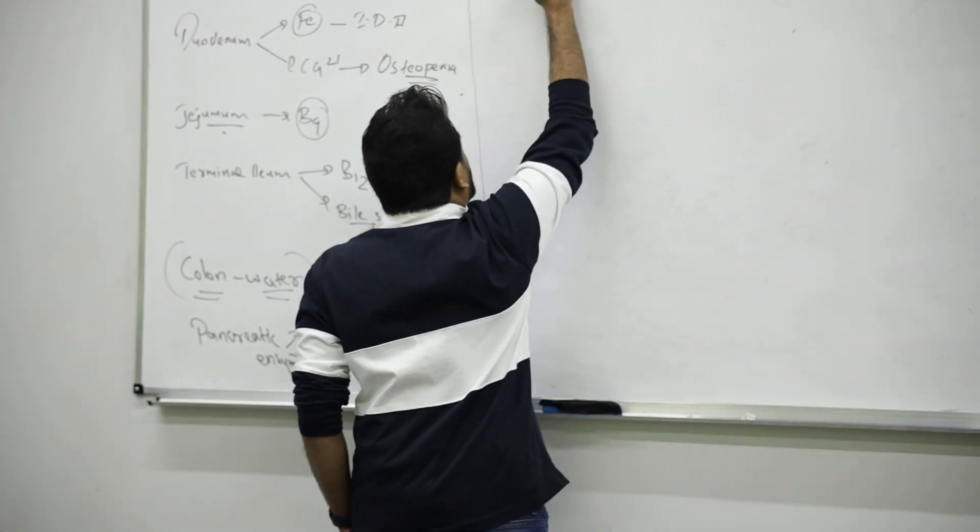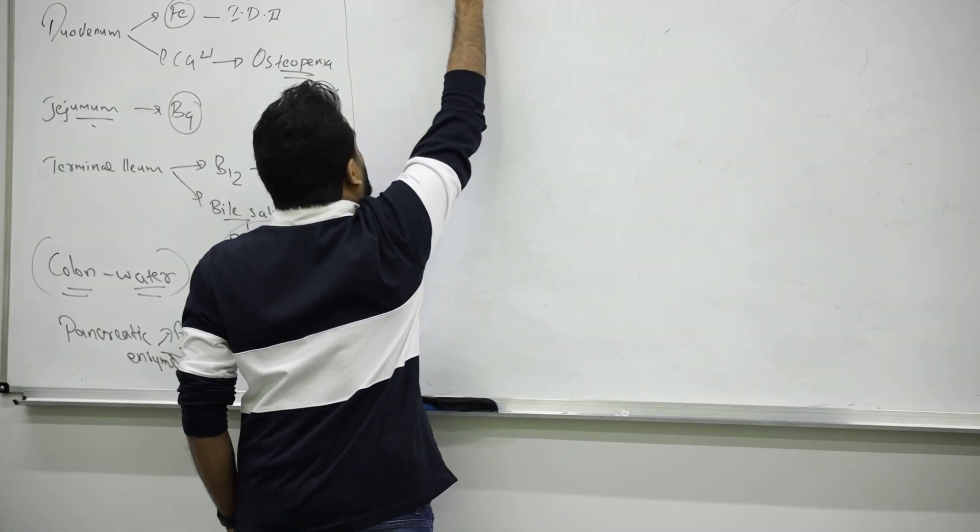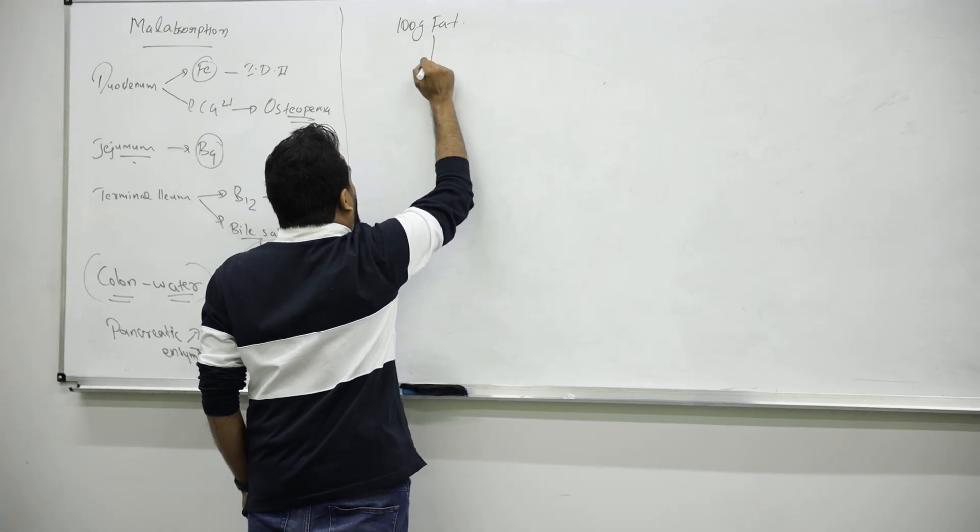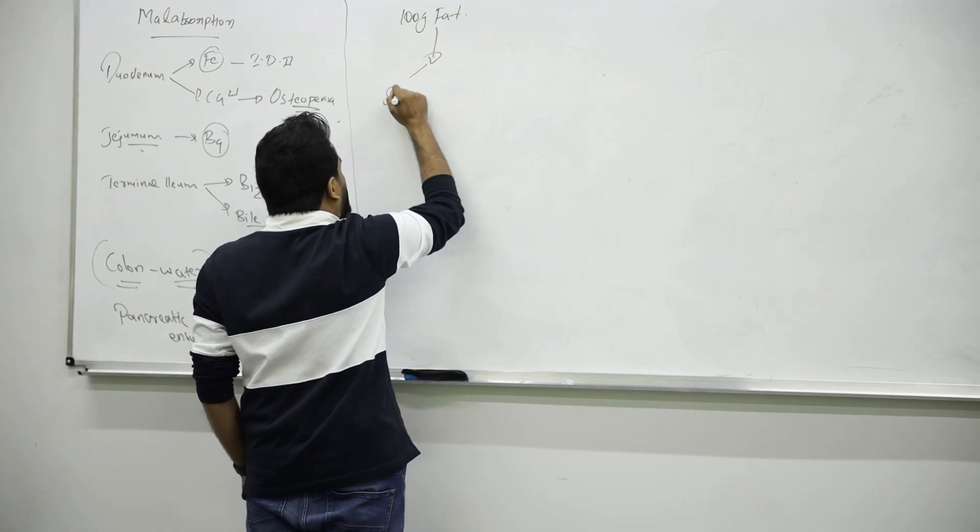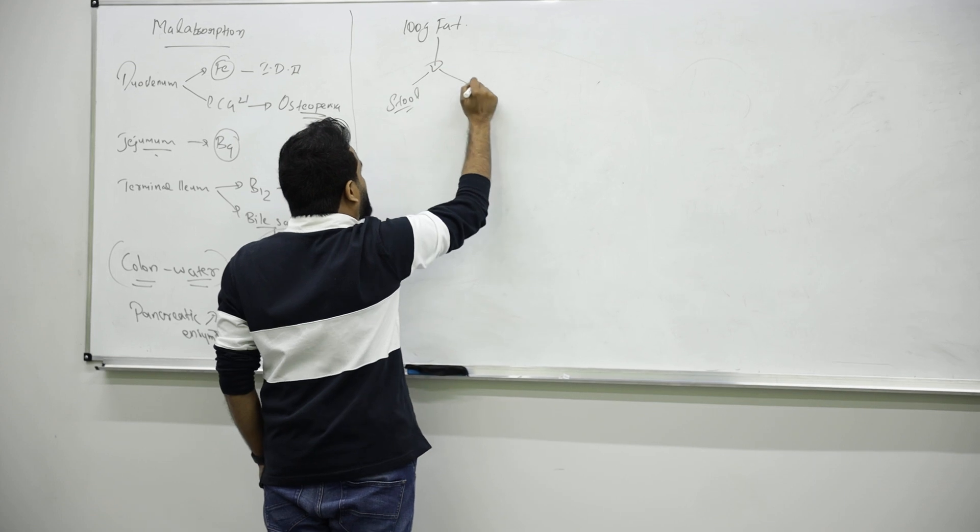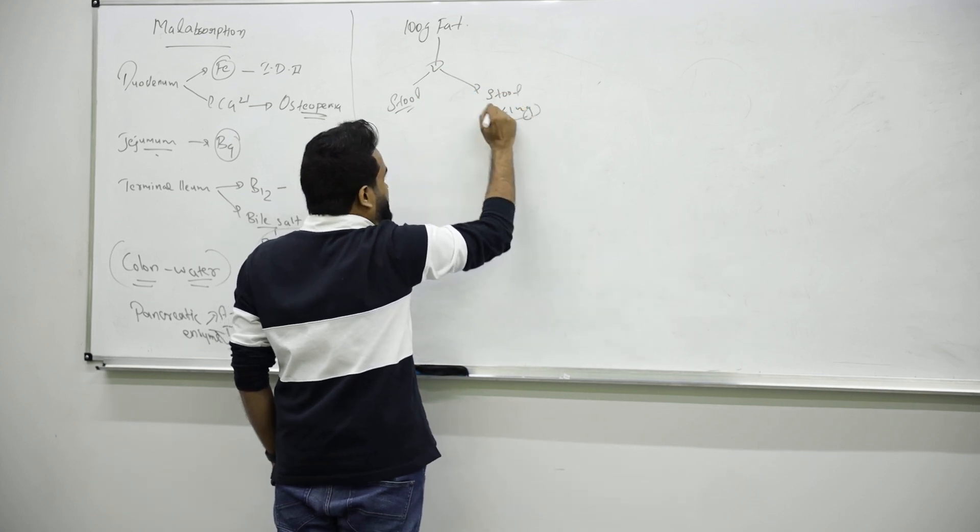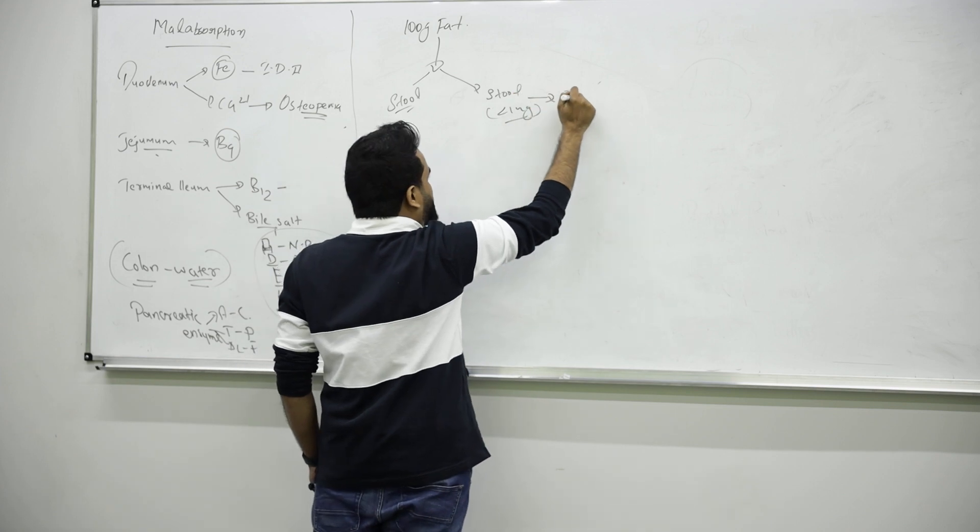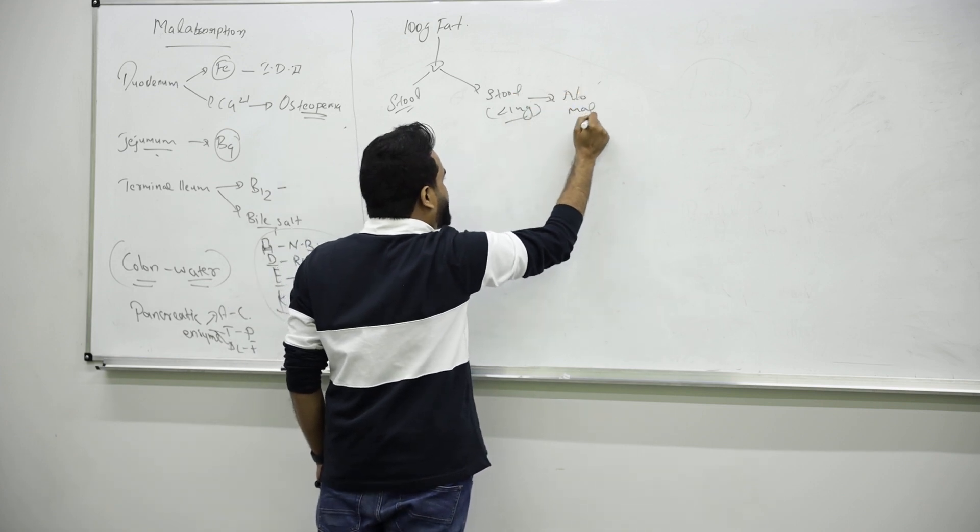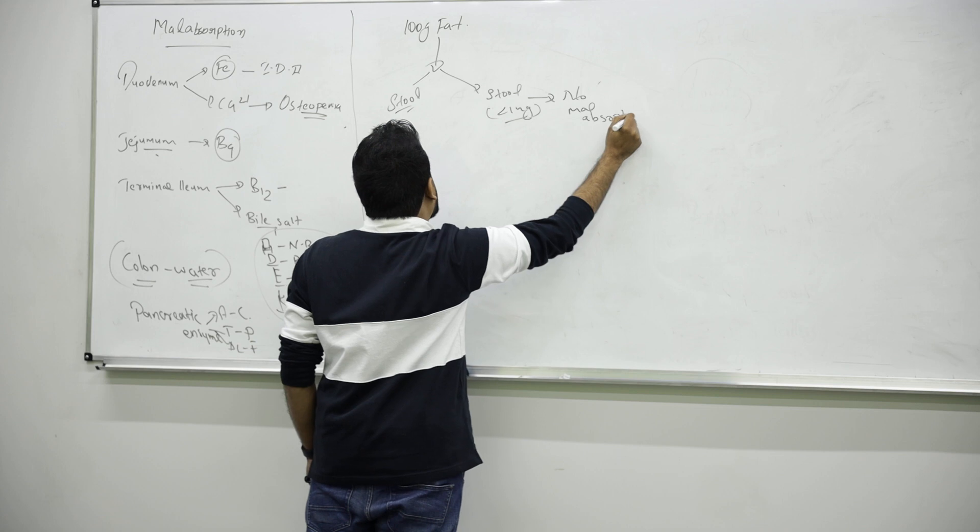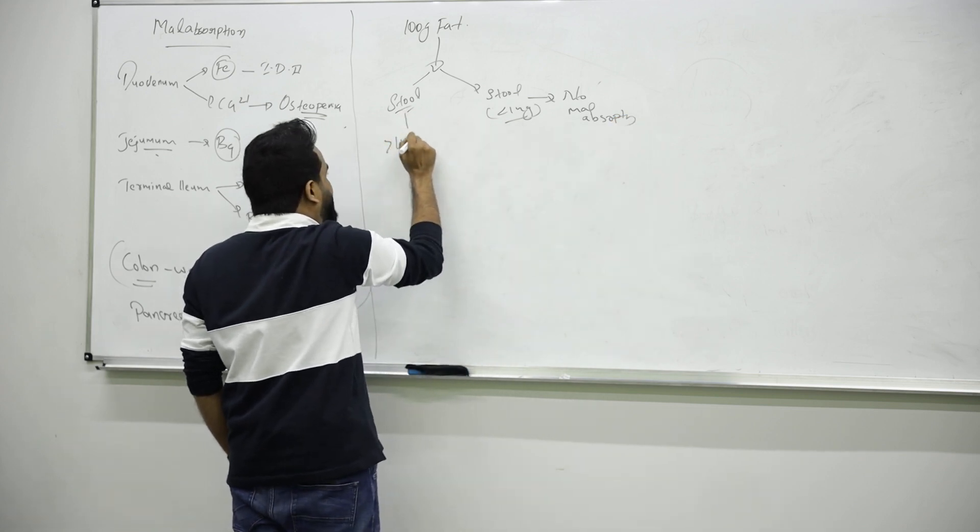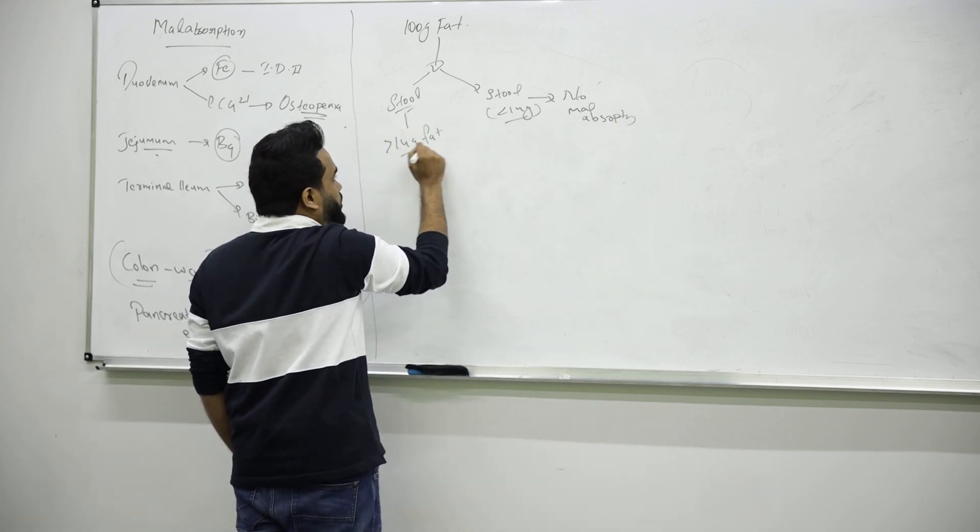So how do you confirm someone has malabsorption? You will give them 100 grams of fat, then check their stool. If you see less than 14 grams, it means no malabsorption, everything is normal. But if you are seeing more than 14 grams of fat in the stool, that's steatorrhea, so you are suspecting malabsorption.